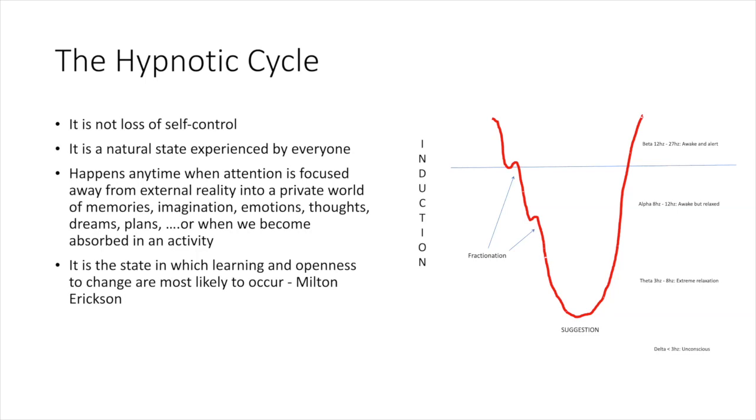Then we get to delta brain waves, and this indicates a state where we are asleep and dreaming, and typically this is below three hertz. These are the slowest of all brain waves, and they are strongest when we enjoy restorative sleep in a dreamless state. Now, delta brain waves occur at a state that stimulates healing and rejuvenation, which is also why it's crucial to get enough sleep each night.